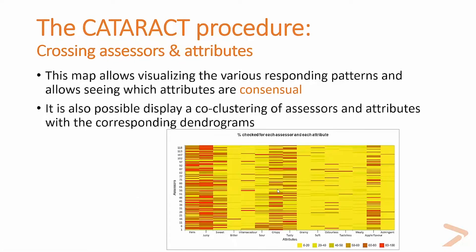The next step crosses assessors and attributes. On the heat map below, you can visualize the various responding patterns, which allows you to see which attributes are consensual or not. For example, 'crispy,' 'tasty,' or 'apple flavor' are not consensual — some assessors will check these attributes while others are not. A further step on this map is a co-clustering that allows displaying a version of the map with assessors grouped depending on how similar they are to each other, and the same for attributes.